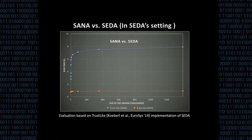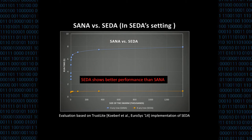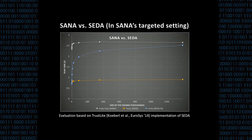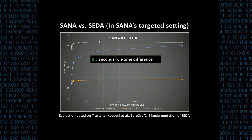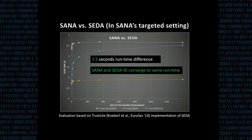In the SEDA setting, SEDA shows better performance because it uses symmetric keys while our protocol uses public key cryptography. However, in our targeted setting with more powerful aggregators, our protocol has only 1.5 seconds more delay than SEDA — corresponding to the time needed to generate an OIS signature on a low-end embedded device. When comparing to SEDA-ID, the two protocols converge to the same runtime in networks with millions of devices.